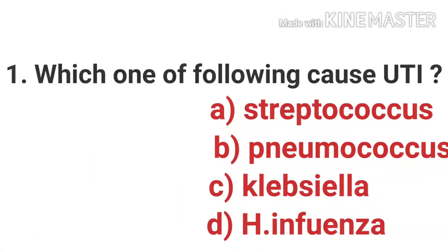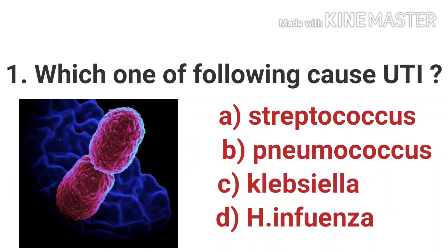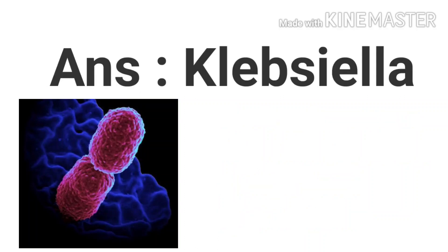The first question is: which one of the following causes UTI? UTI means urinary tract infection. The options are Streptococcus, Pneumococcus, Klebsiella, and Haemophilus Influenza. The answer is Klebsiella. Urinary tract infection is the infection in any part of the urinary system. Most infections involve the lower urinary tract — the bladder and urethra. The common causes include E. coli, Klebsiella, and Proteus. Klebsiella is the correct answer.